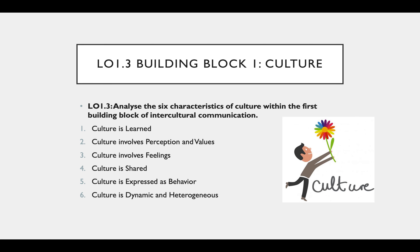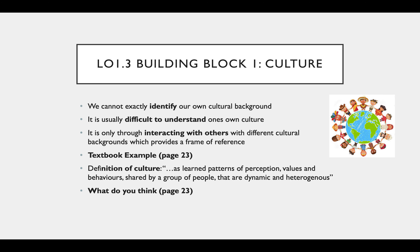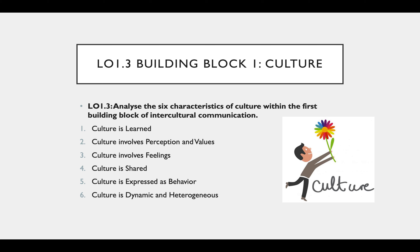Culture is broken down into six characteristics, as seen in the definition: learned, perception, behavior, shared, dynamic, and heterogeneous. So the six characteristics of culture are: culture is learned; it involves perception and values; it involves feelings; it's shared by a group of people; it's expressed by behavior; and it's dynamic and heterogeneous within the group — meaning that everyone within a culture is not the same.